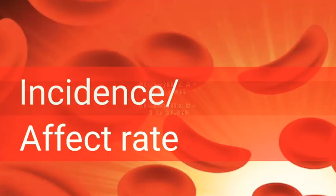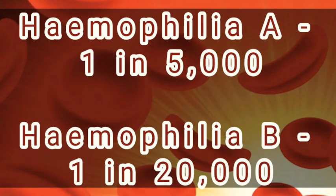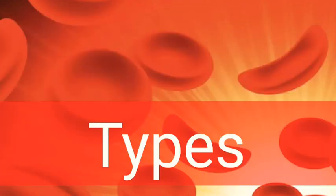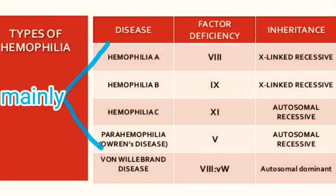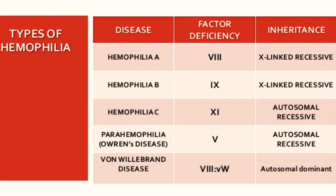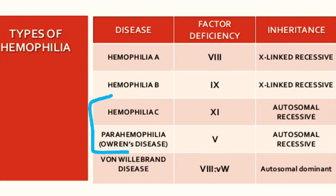Regarding incidence, hemophilia A occurs in about 1 in 5,000 of the human population, and hemophilia B occurs in about 1 in 20,000. According to symptoms, hemophilia is divided into mild, moderate, and severe forms. It is commonly divided into four types: hemophilia A, hemophilia B, hemophilia C, and parahemophilia. The first two are X-linked recessive and the latter two are autosomal recessive.